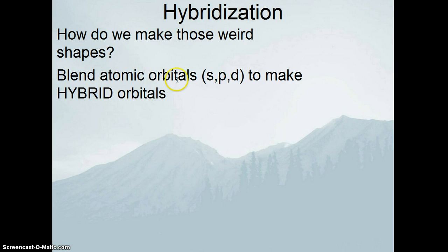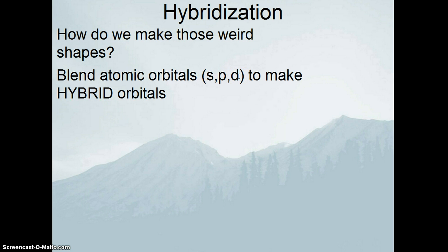What's going to happen is we're going to take atomic orbitals — s, p, and d orbitals — and make a series of hybrid orbitals. Remember that atomic orbitals have their own shape: s orbitals are spherical, p orbitals are a pair of balloons 90 degrees to each other, and d's are really strange shapes. None of these orbitals have the shape of the molecules we've seen, like tetrahedral or trigonal planar.